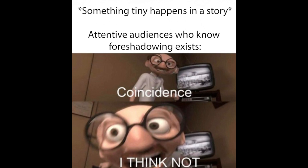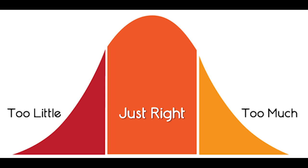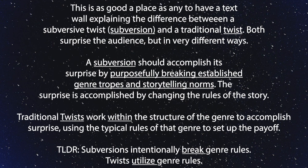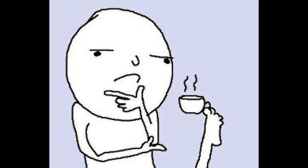The first way you make sure that a subversion will land with your audience is to provide foreshadowing. This can be anywhere from subtle to obvious, but if it's too obvious, the subversion won't work, because the audience will already know what's going to happen. But if it's too subtle or not there at all, the audience will feel cheated by the deception, or think that the subversion doesn't make narrative sense. All this is to say that foreshadowing is an art in and of itself, and doing it well can be tricky. But it must be done, and it has to be done well to accomplish a successful subversion. But how do you use foreshadowing to pull off a successful subversion? Let's look at some examples.